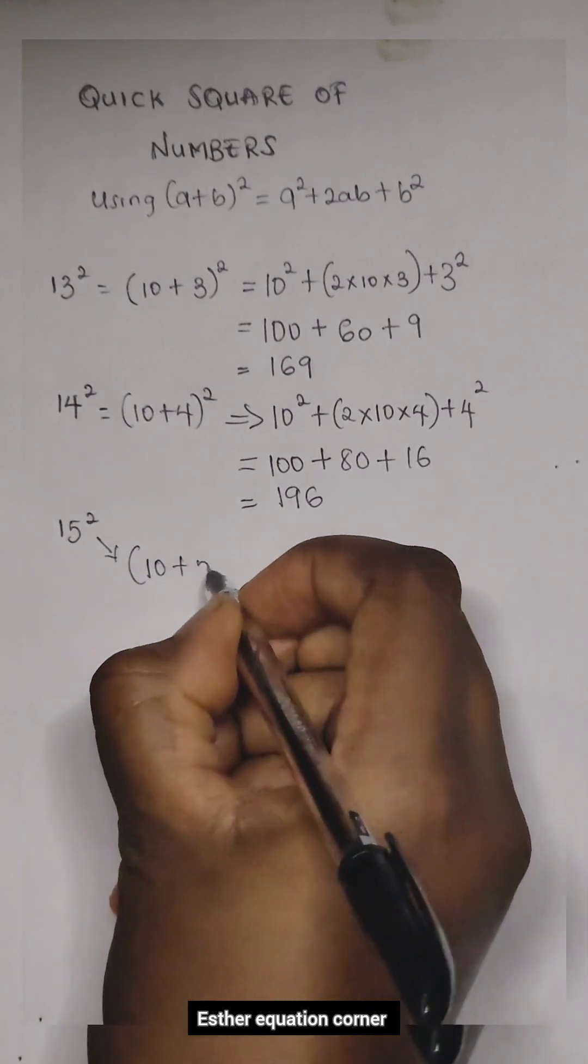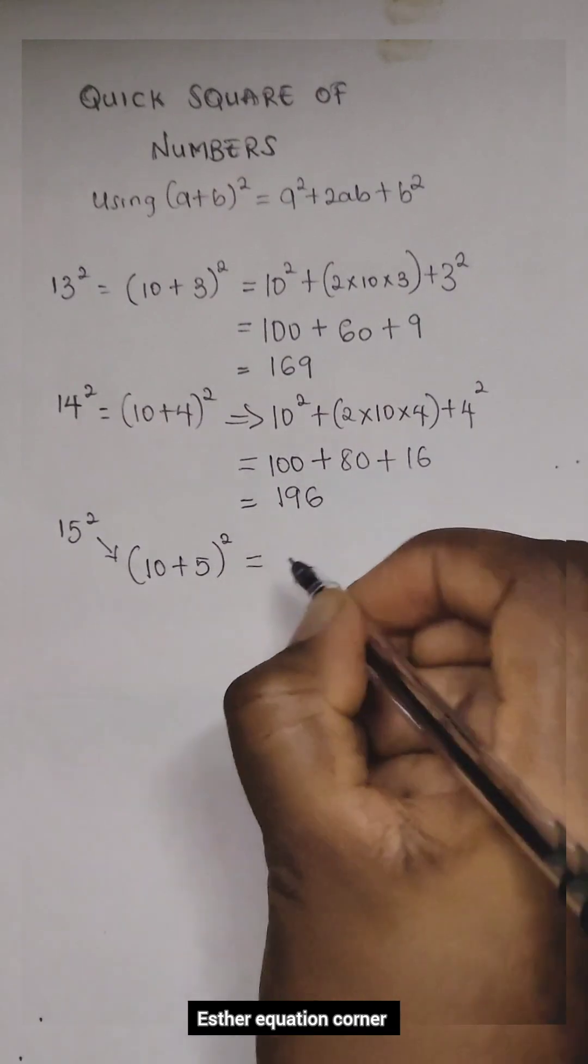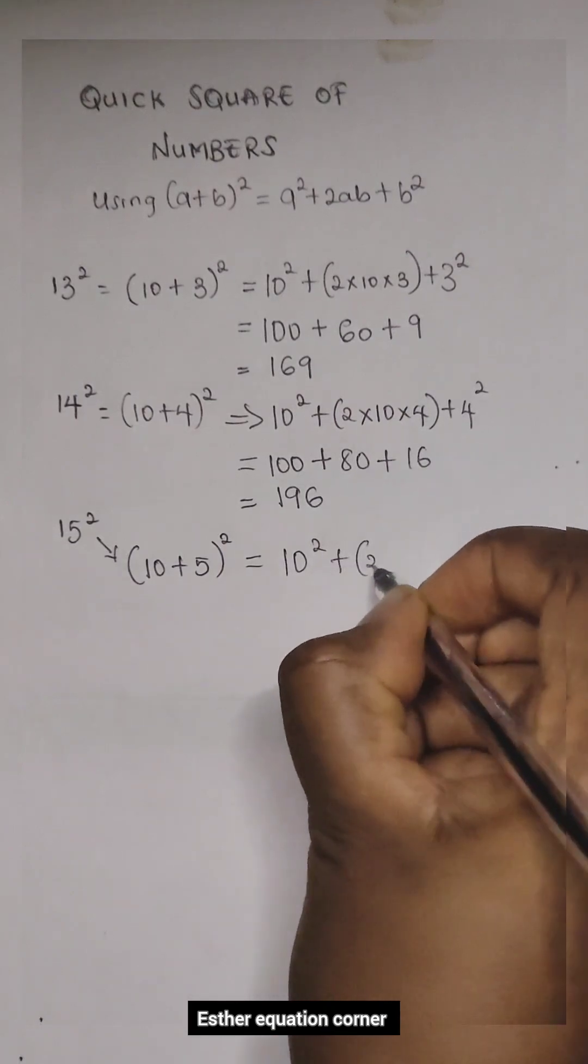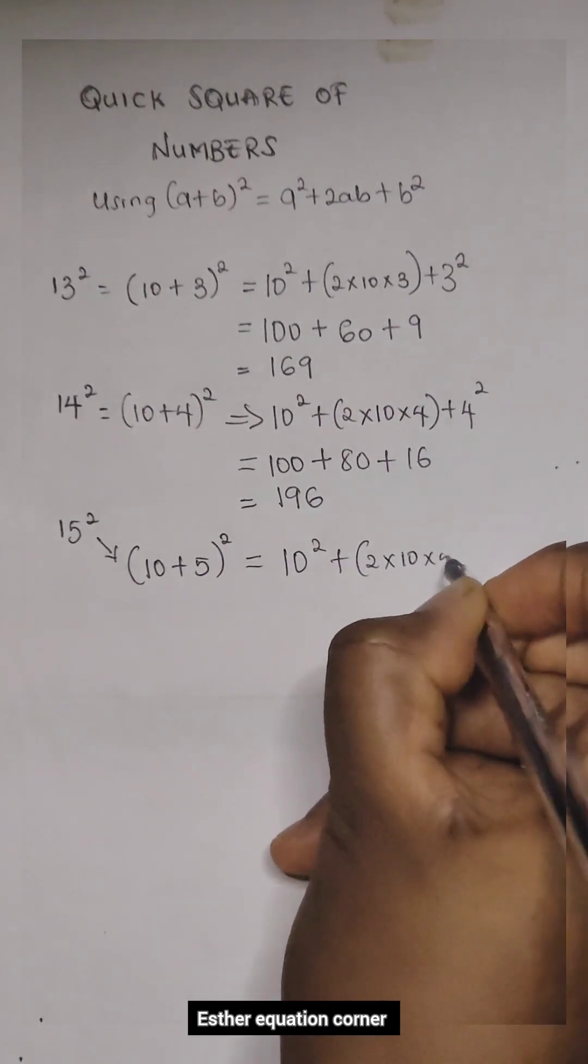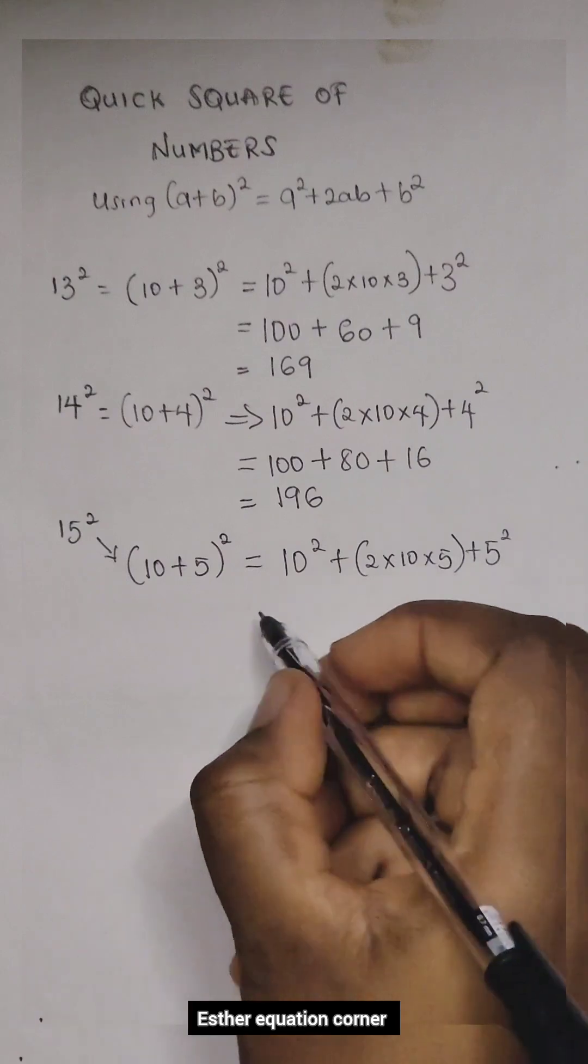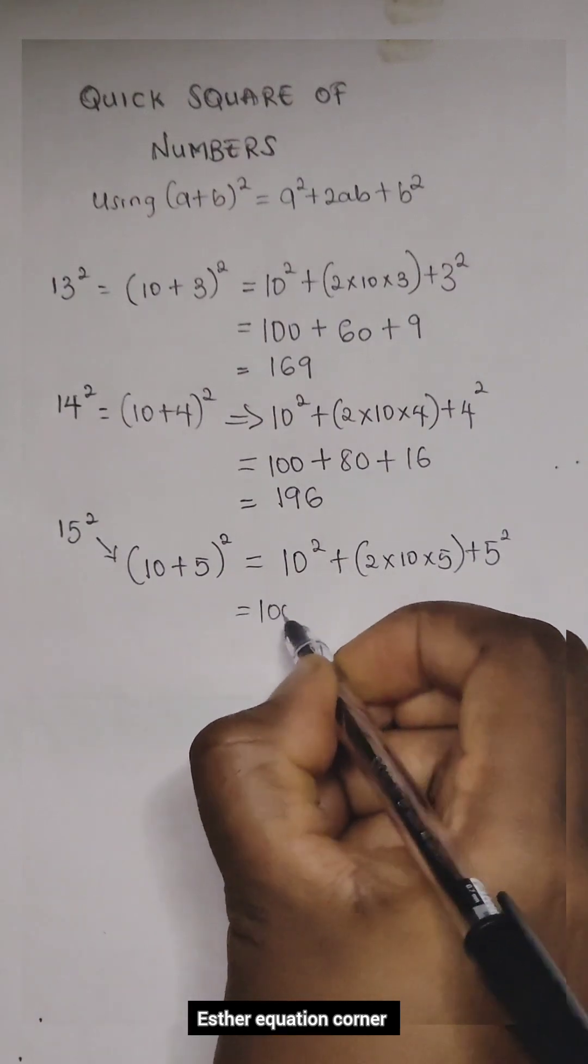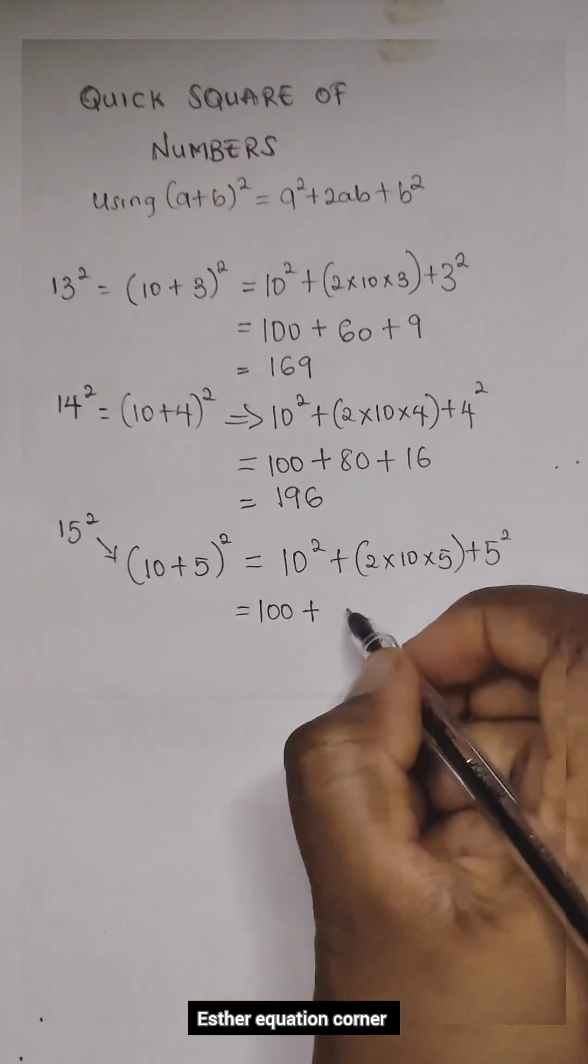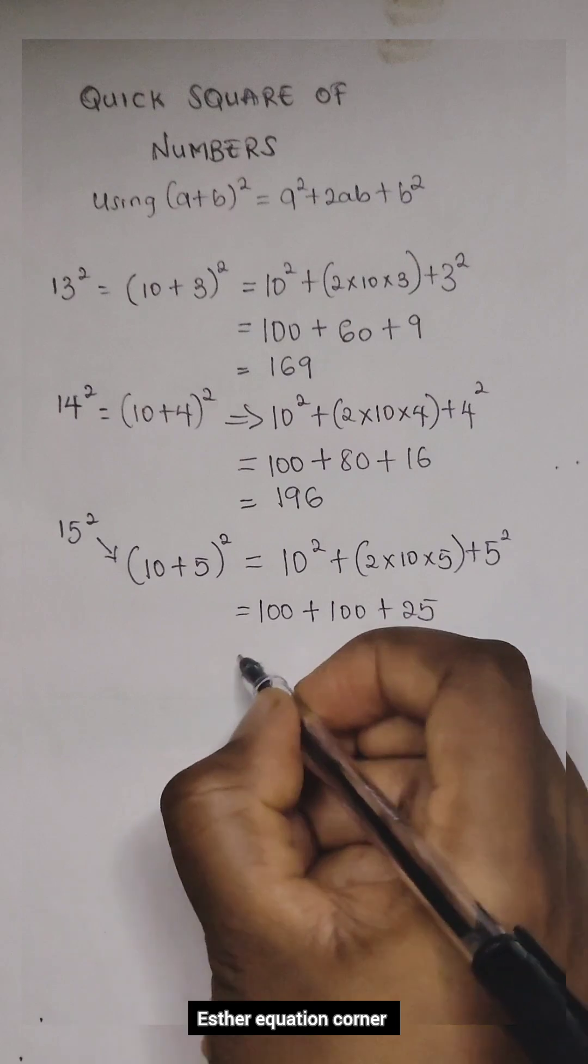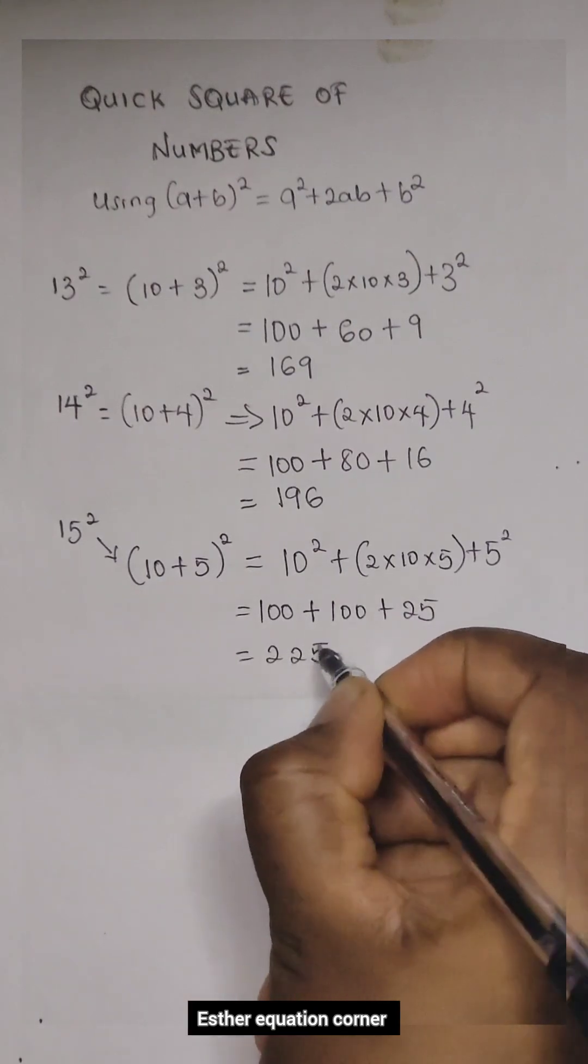15² we have (10 + 5)², which will give us 10² + 2 times 10 times 5 + 5², which is 100 + 100 + 25. This is 225.